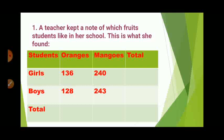Here I have taken data about the fruits liked by students in a school. A teacher is keeping the record of those fruits liked by the students and she found that 136 girls like oranges, 240 girls like mangoes. Similarly, she found that 128 boys like oranges and 243 boys like mangoes.